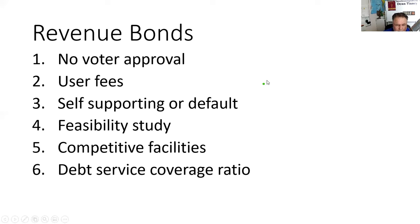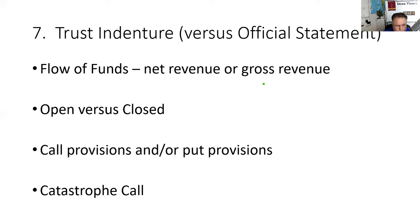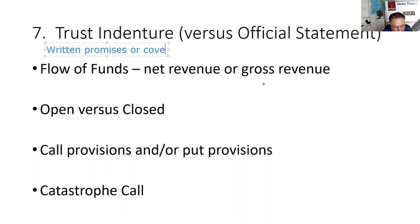Distinguishing between GOs and revenues is a big part of your exam. They love to torment you on documents. Make sure you understand that the covenants — the written promises — are contained in the trust indenture, not in the official statement. A covenant is a fancy word for promises.